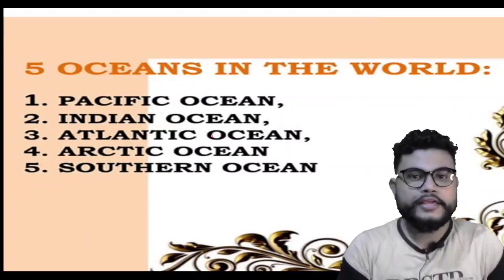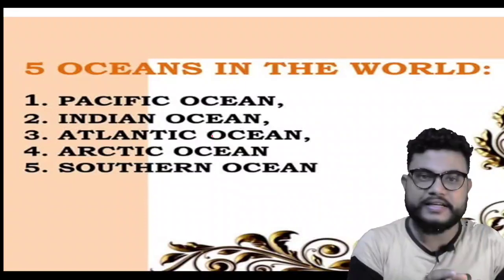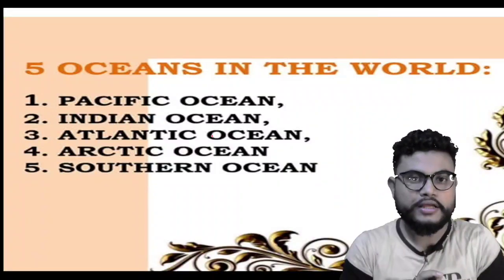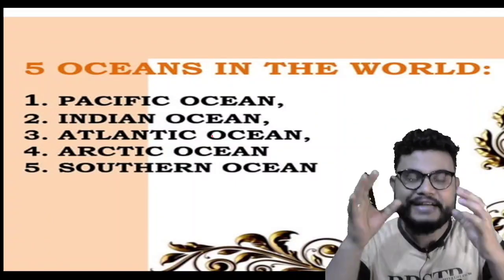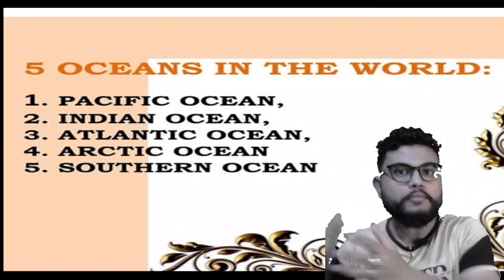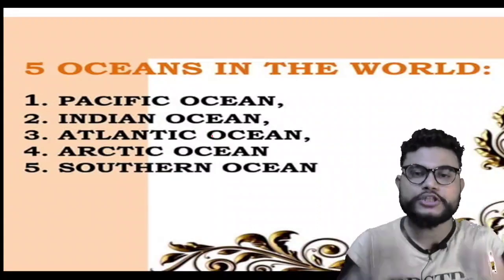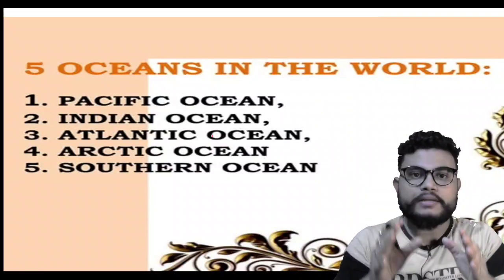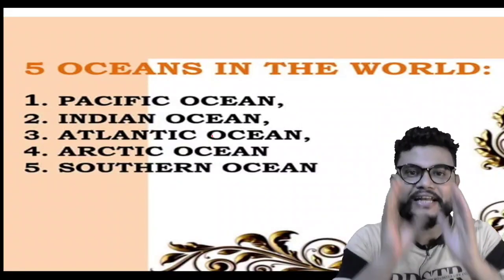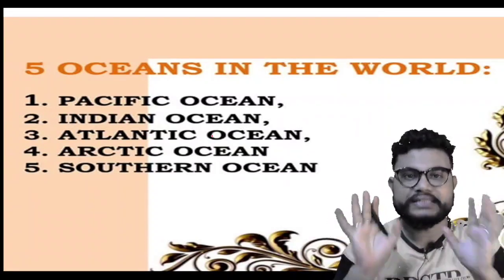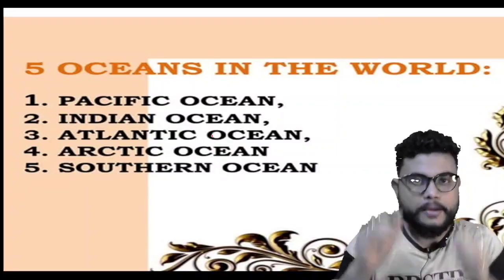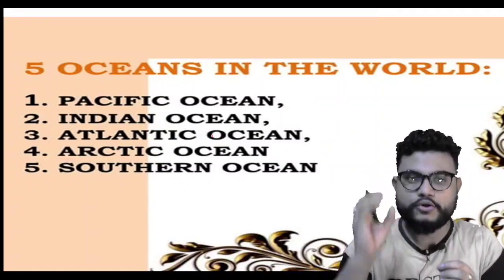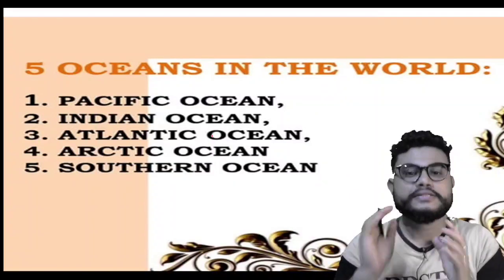In order to identify different large water bodies and get information about them, these water bodies are segregated or classified. Five large water bodies exist: Pacific Ocean, Indian Ocean, Atlantic Ocean, Arctic Ocean, and the last one is Southern Ocean.